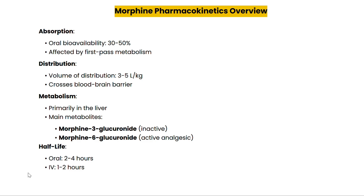Morphine is primarily metabolized in the liver through glucuronidation, producing two main metabolites: morphine-3-glucuronide, which is inactive, and morphine-6-glucuronide, which has analgesic properties. This metabolism is crucial for both its therapeutic effects and potential side effects. The half-life of morphine varies depending on the route of administration — for oral morphine it is about two to four hours, while for intravenous morphine it is around one to two hours. Understanding the half-life helps in determining dosing intervals and managing potential accumulation in the body.